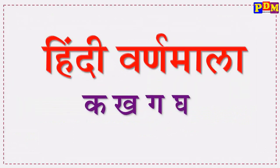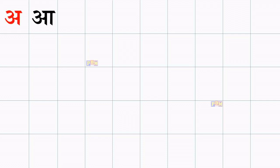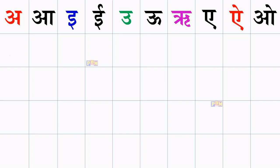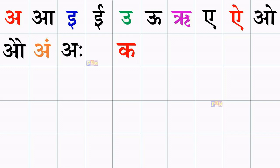Hindi Varna Mala. A, aa, i, ii, u, uu, ru, e, ai, o, au, am, ah.